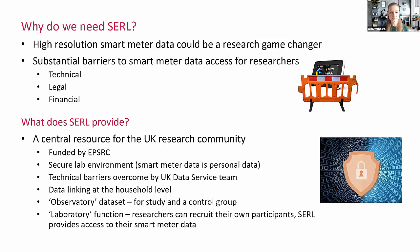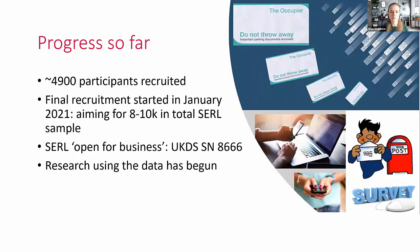We provide data linking at the household level. Our main focus today is the observatory data set — the data set of eight to ten thousand households, which can be used as a study on its own or as a control group for your projects. We're also providing a laboratory function where researchers can recruit their own participants and access their smart meter data with consent. So far we've recruited around half our participants and are in the final wave of recruitment, aiming to reach ten thousand in the next couple of months. We are open for business with UKDS study number 8666.